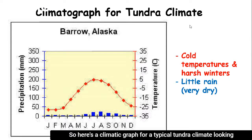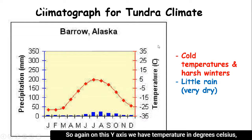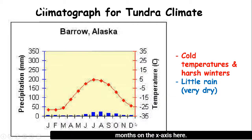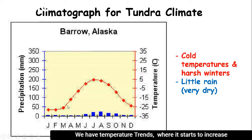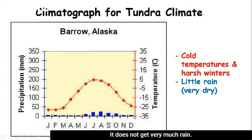Here's a climatograph for a typical tundra climate looking at Alaska. On the y-axis we have temperature in degrees Celsius, then we have precipitation levels in millimeters, and months on the x-axis. We have temperature trends where it starts to increase during summer months but gets really cold during winter months. These blue bars represent the precipitation levels — you can see it's pretty dry and they don't really get very much rain.